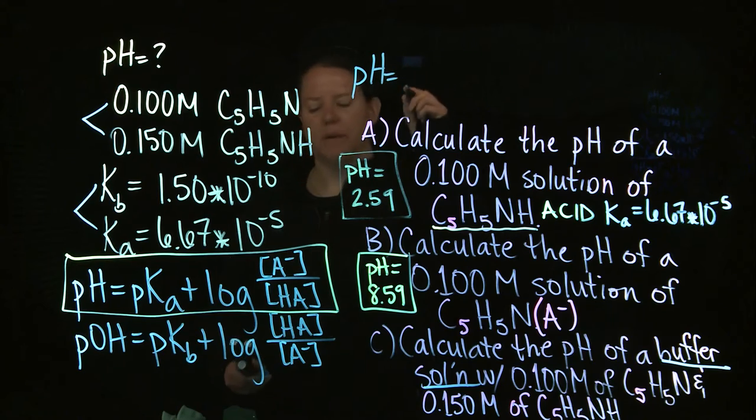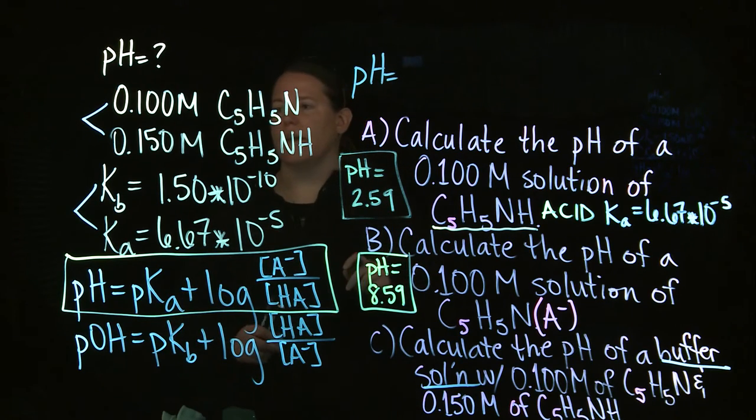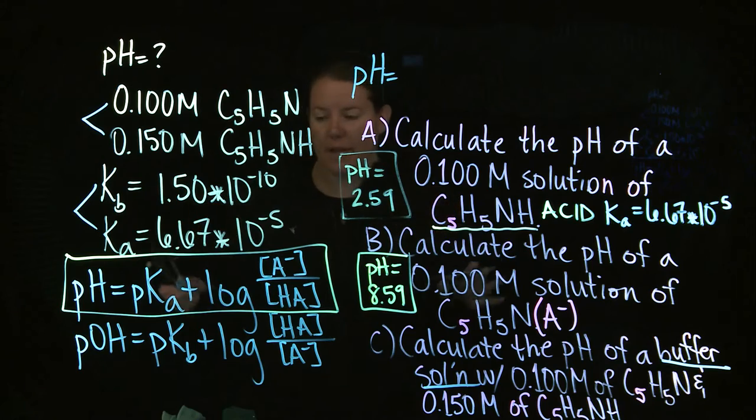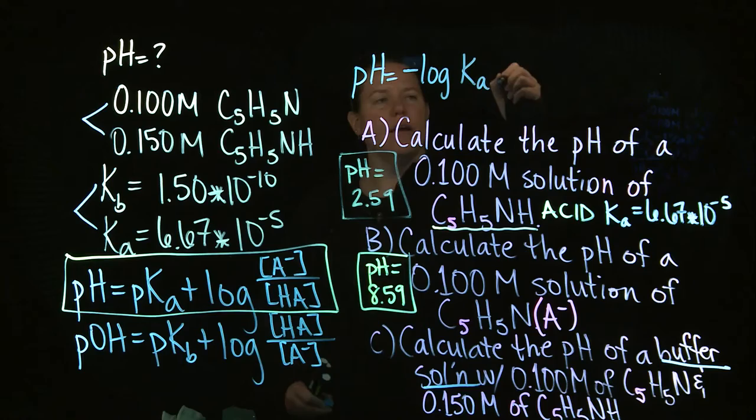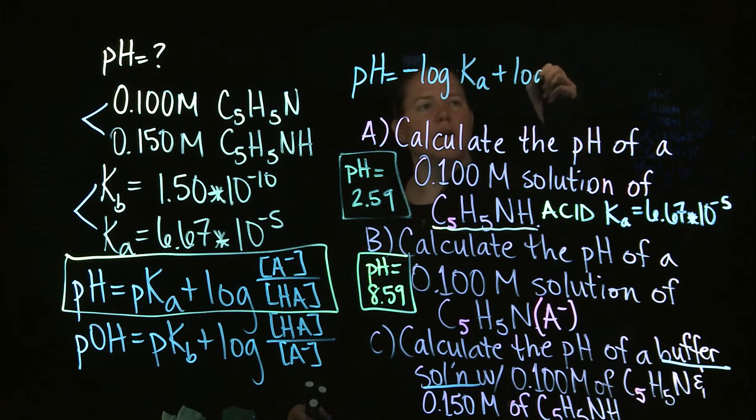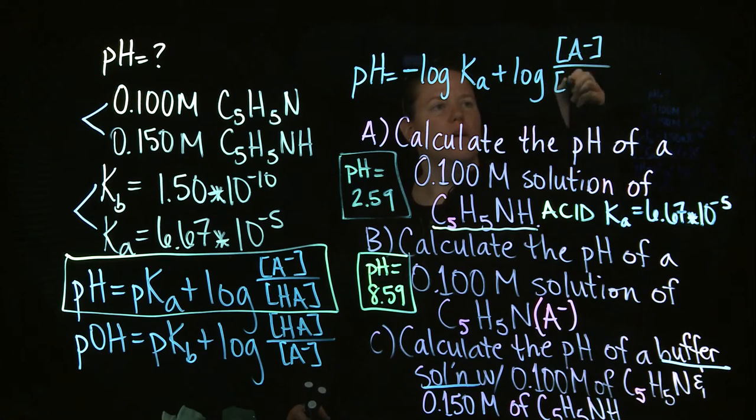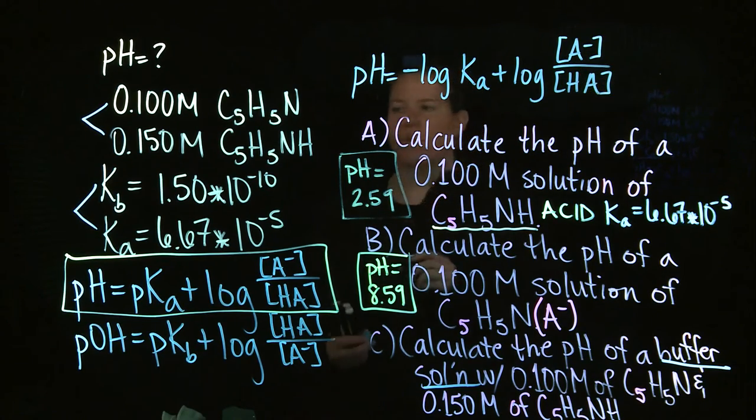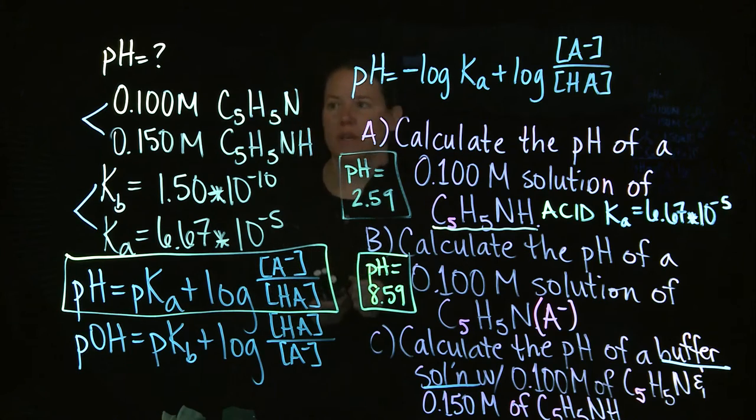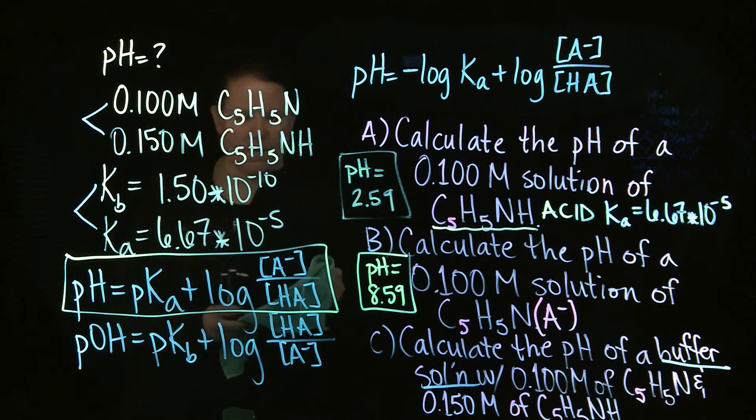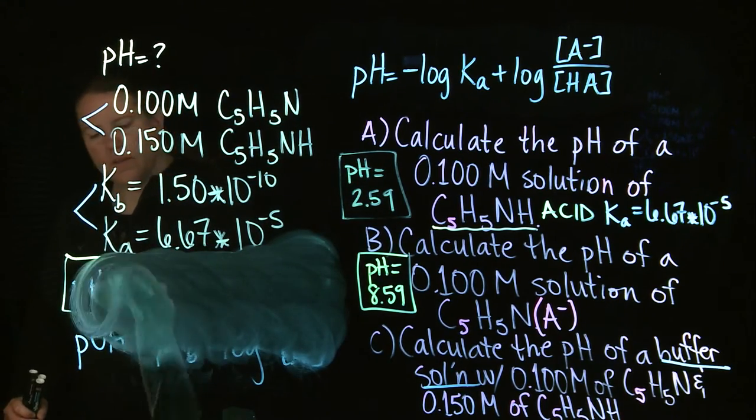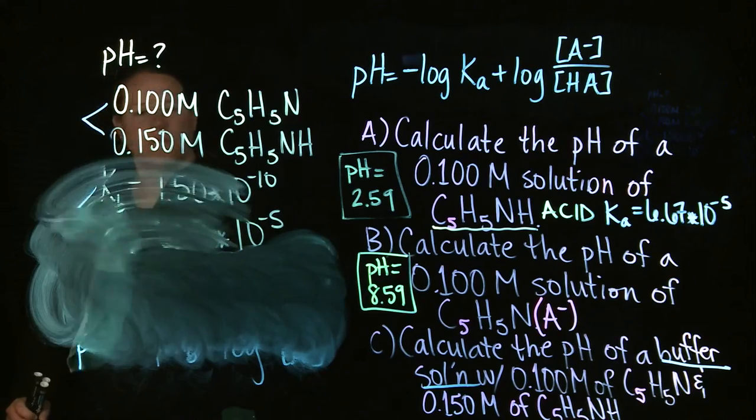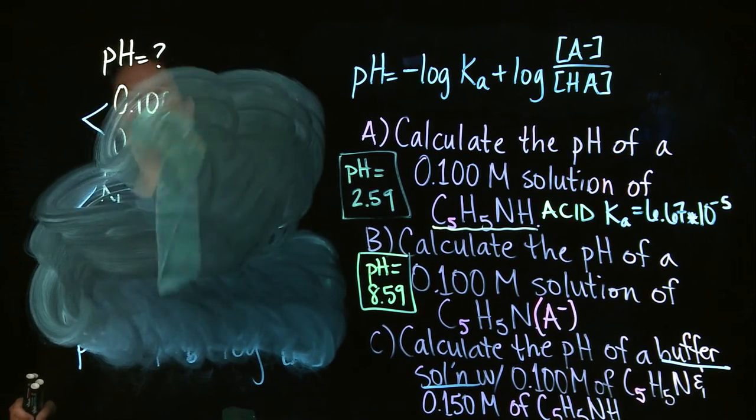pH equals pKa. Now what is pKa? pKa, just like p is for everything else, is the negative log of the Ka. Negative log of Ka plus the log of A minus over HA. So let's use our amounts here. In terms of our amounts, what we got, I'm going to erase this stuff, so I can plug it in.